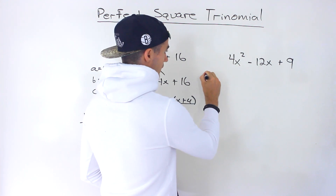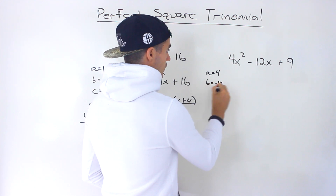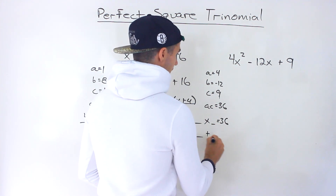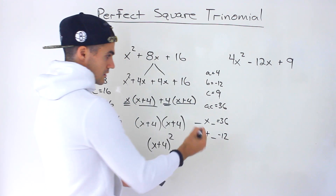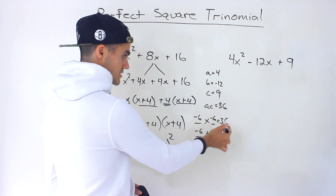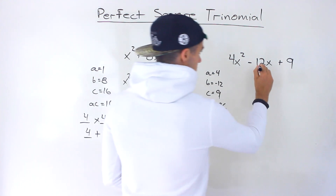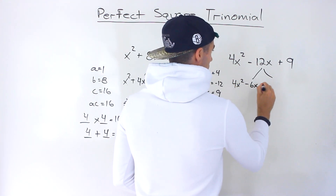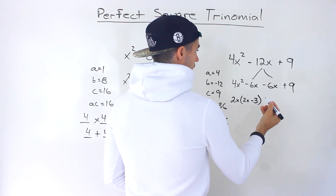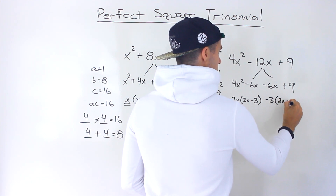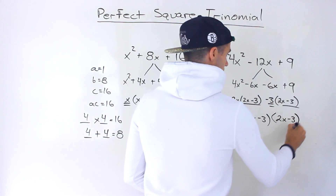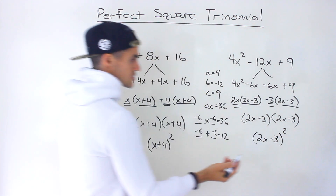Factoring this by decomposition: the a value is 4, b value is negative 12, c value is 9. The ac value is 4 times 9, which is 36. We need two numbers that multiply to 36 and add up to negative 12. That's negative 6 and negative 6 — negative 6 times negative 6 gives positive 36, and negative 6 plus negative 6 gives negative 12. We decompose the middle term, take out 2x from the first pair giving 2x minus 3, take out negative 3 from the second pair also giving 2x minus 3, then factor out 2x minus 3, leaving 2x minus 3 squared.